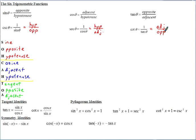These represent the six possible ways you can take the ratio of two sides of a right triangle. As long as you remember SOHCAHTOA and which ones match up with which — cosecant is the reciprocal of sine, secant is the reciprocal of cosine, and cotangent is the reciprocal of tangent — it makes these much more manageable.